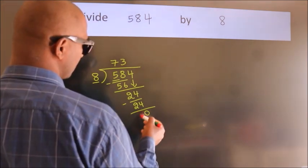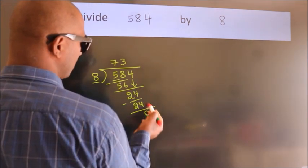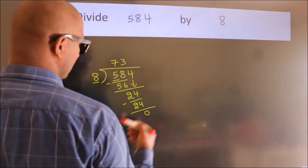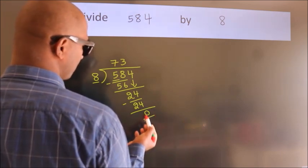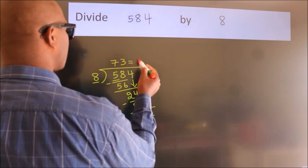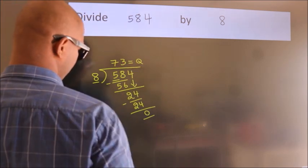After this, no more numbers to bring down. We got remainder 0. So this is our quotient: 73.